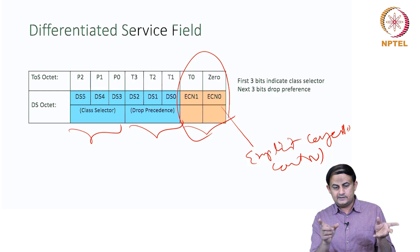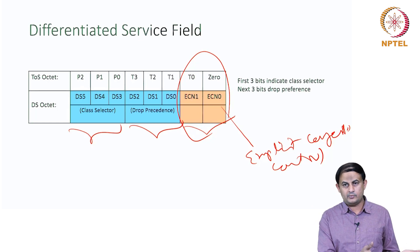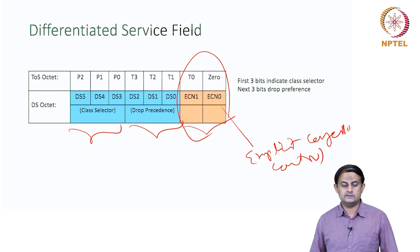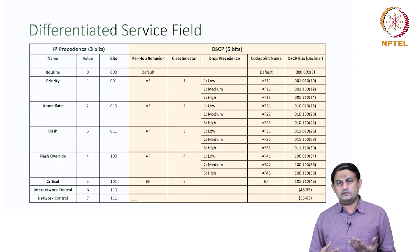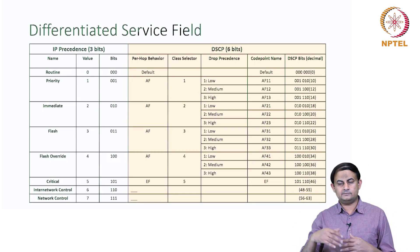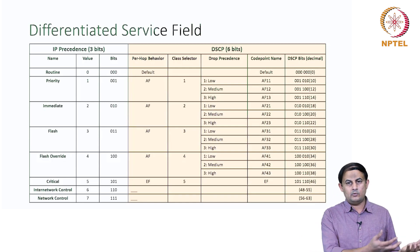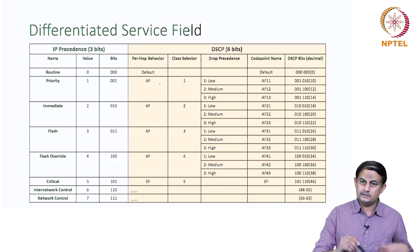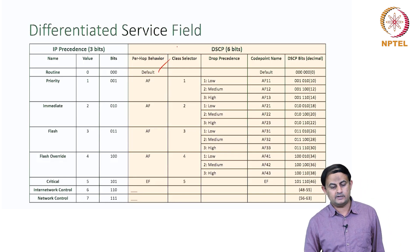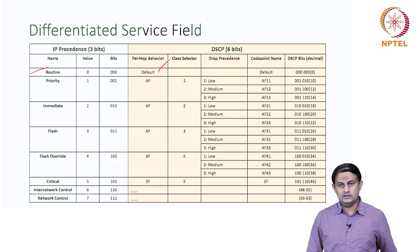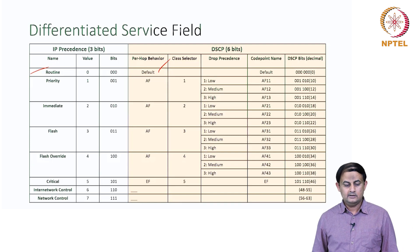So out of the eight bits, six are used for assigning the code point, and the remaining two bits are used for explicit congestion control. The way DSCP defines the service model is that it maps the different kinds of classes to what the IP precedence model previously defined. For example, the default is the best-effort service delivery model — there is no change in that — and it maps to the routine preference in the IP precedence or type of service model.